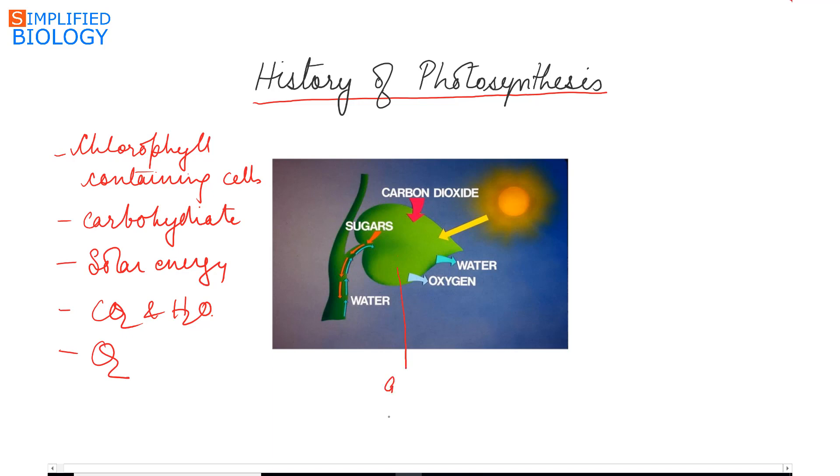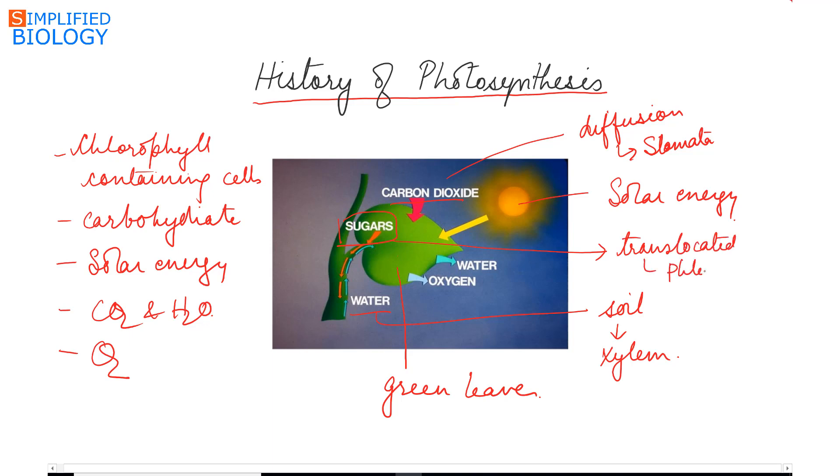Chlorophyll containing cells means the green plants or the green leaves which have chlorophyll. They utilize solar energy or trap the solar energy. Carbon dioxide is taken from the atmosphere by the process of diffusion through the stomata. Water is taken from the soil and reaches the leaf through the xylem. The sugar that is formed is translocated to the different parts of the plant through the phloem, and oxygen that is the by-product is released back into the atmosphere by the process of diffusion.